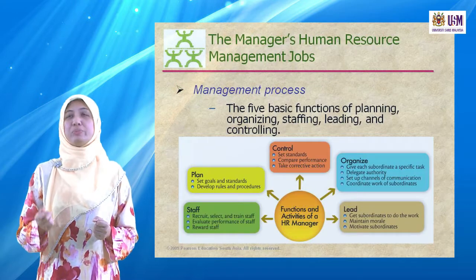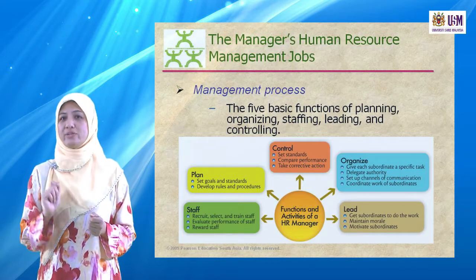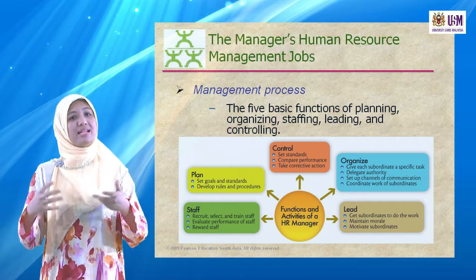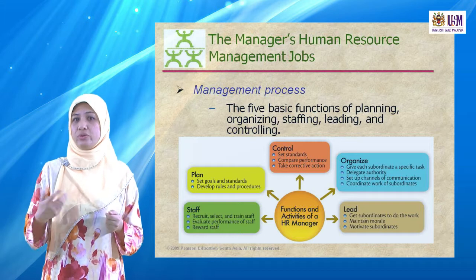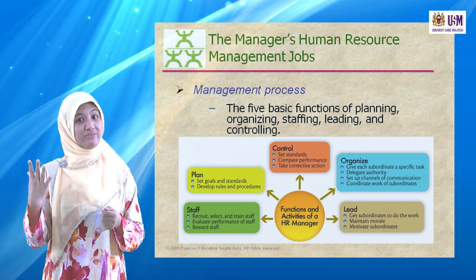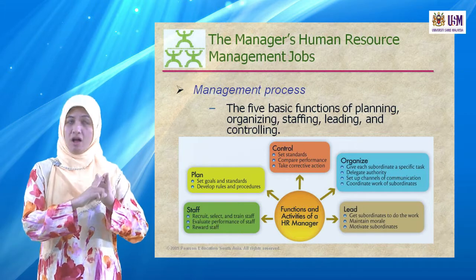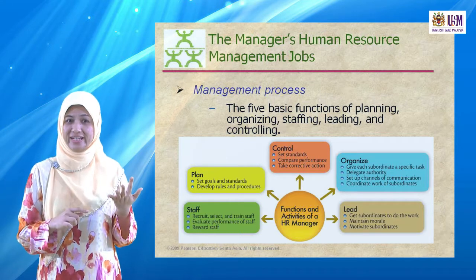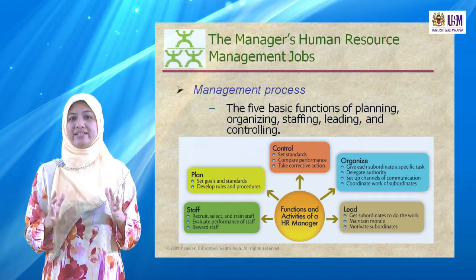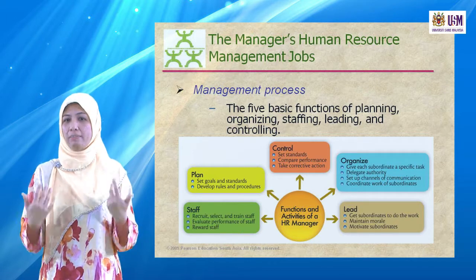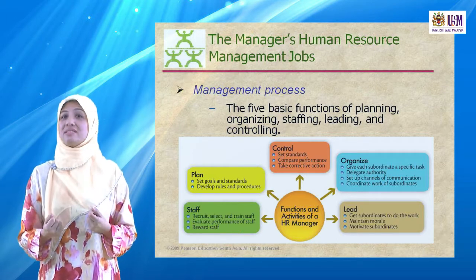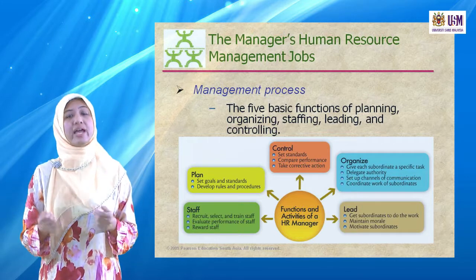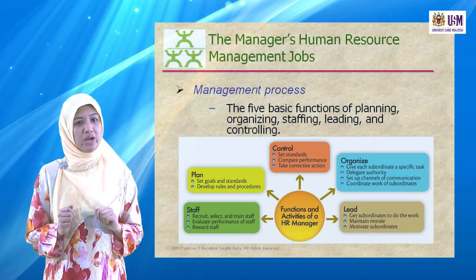Human resource management is related to the principles of management in certain ways. The management process has five basic functions: planning, organizing, staffing, leading, and controlling. We're going to talk about how planning, organizing, staffing, leading, and controlling are useful and relate to human resource management.